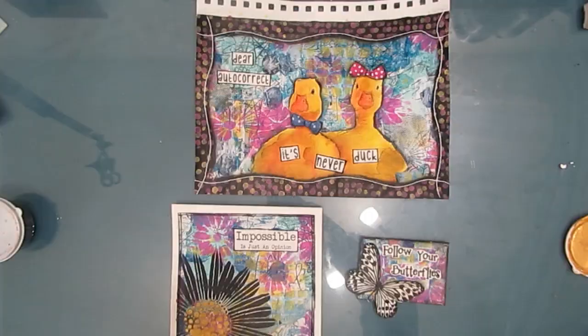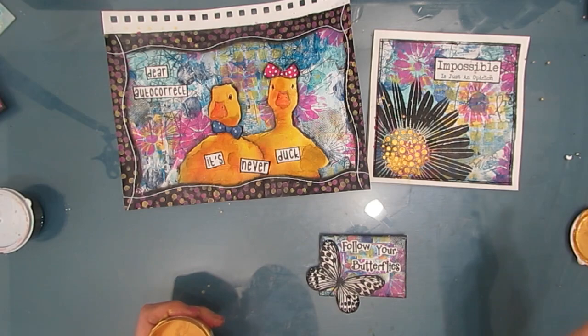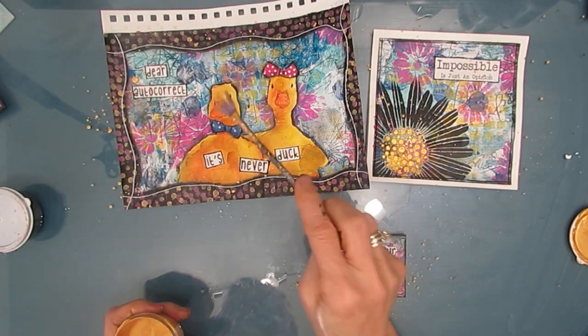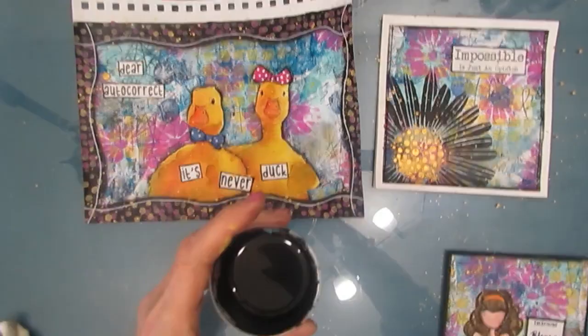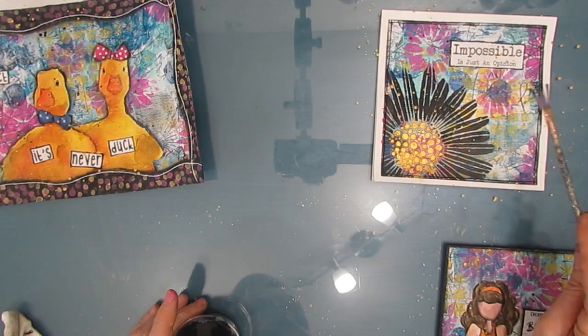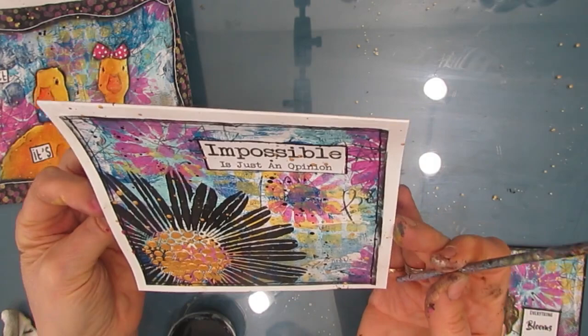So now I'm going to splatter them. And I'm splattering with gold. And then I splatter with black as well. And you can see I used my fan brush for splatter.